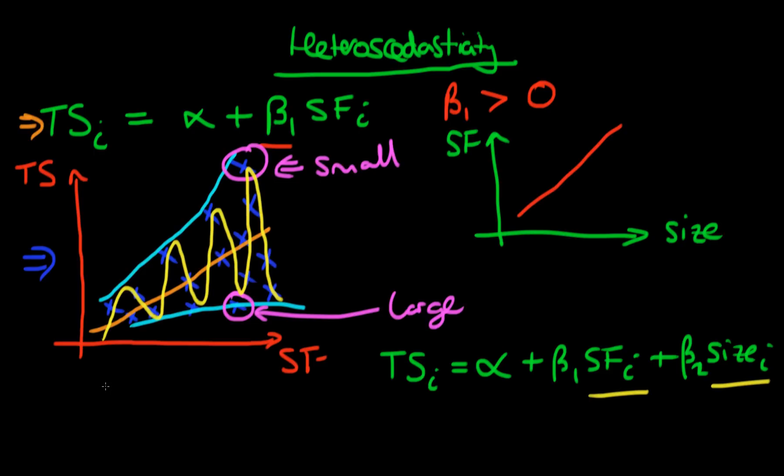In the next video, we're going to talk about how serial correlation can similarly be symptomatic of omitted variable bias. I'll see you then.